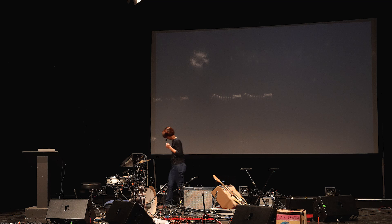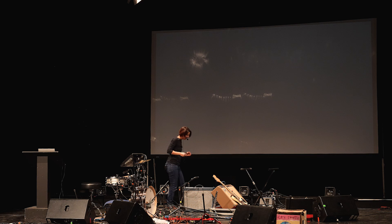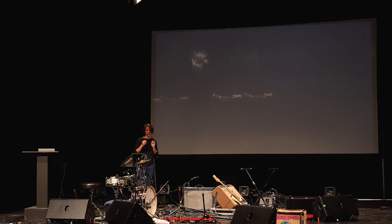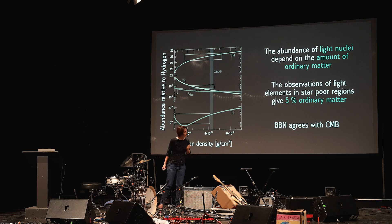Hydrogen: one nucleon. Deuterium: a proton and a neutron — they bind together to form the nucleus. You can put together two deuterium, get helium-3, and then add another interaction and you get to helium. This was possible three minutes after the beginning of the history of the universe. Three minutes. This is called Big Bang nucleosynthesis. This idea was put forward in 1948 by Alpher and Gamow.